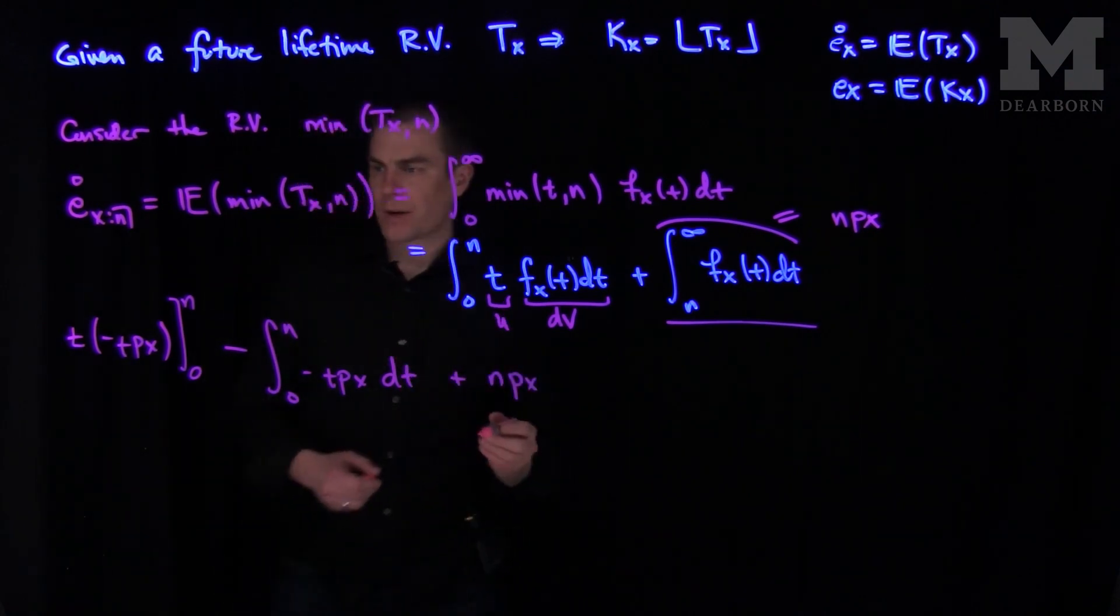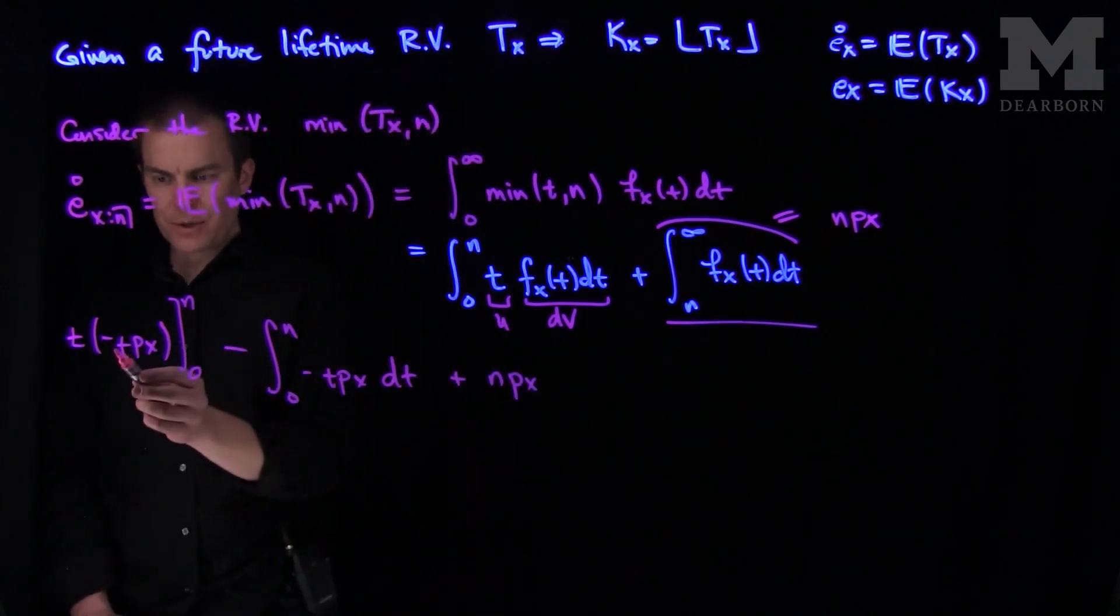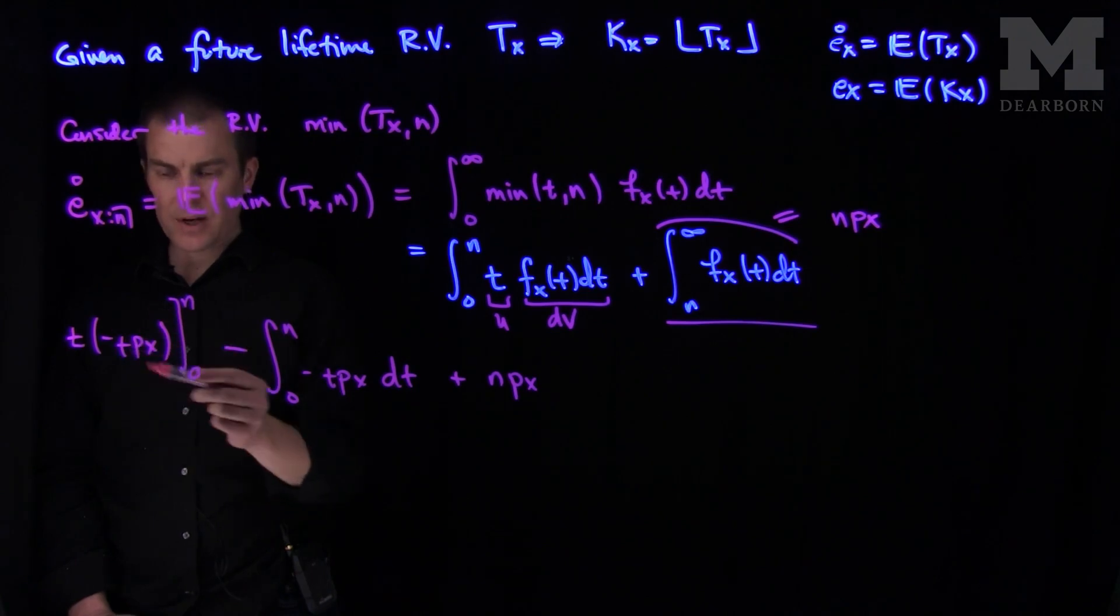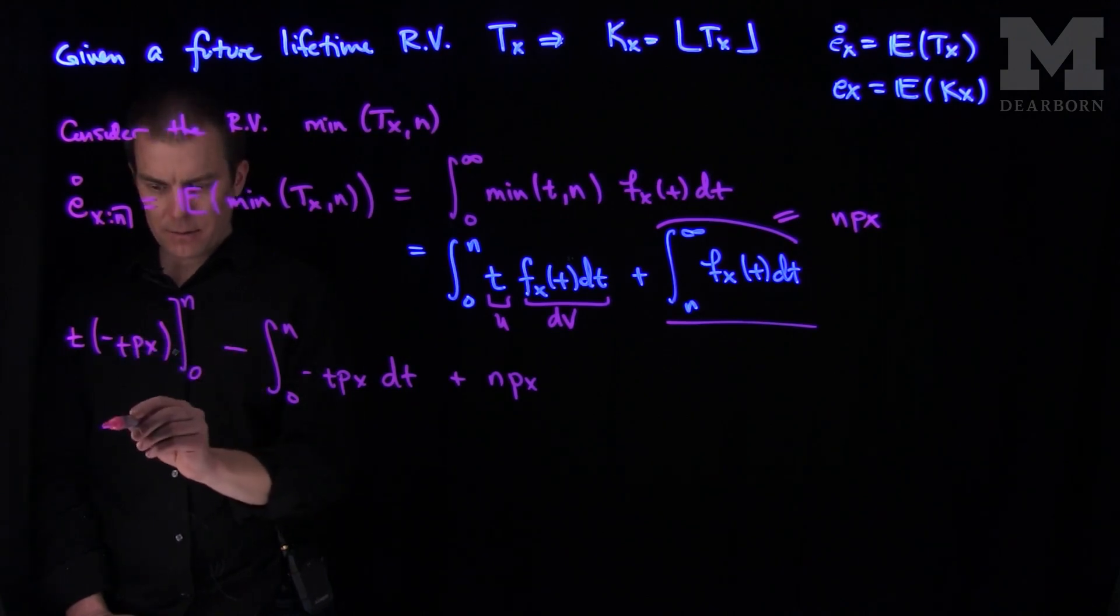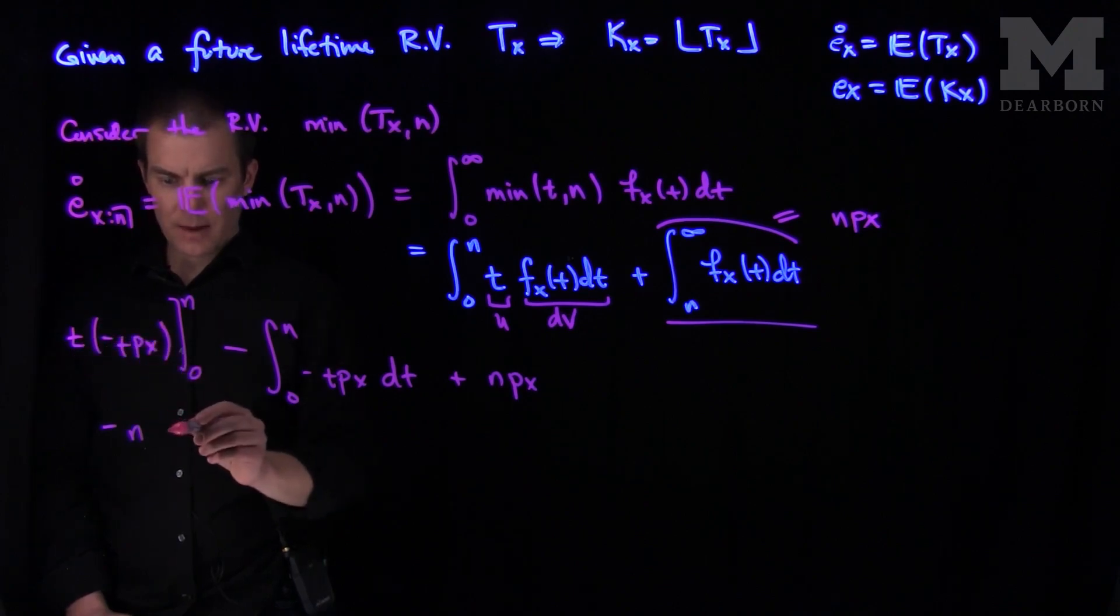And we saw that this part of the integral over here is just going to be n px. And so what we have over here, when we plug in t equals zero, we'll get zero. When I plug in t equals n, I'll have negative negative n. And then we'll have a n px.